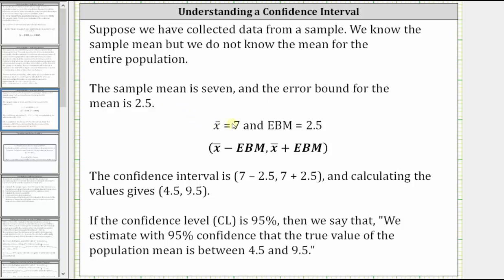Which means x̄ = 7 and EBM = 2.5. Therefore, the confidence interval is (7 - 2.5, 7 + 2.5), and calculating the values gives (4.5, 9.5).